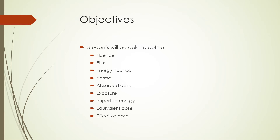Let's look at the objectives for today. After this lecture, the student will be able to define the following terms: fluence, flux, energy fluence, and energy flux. The student will also be able to define and give the SI and traditional units for absorbed dose, exposure, kerma or energy imparted, equivalent dose, and effective dose.